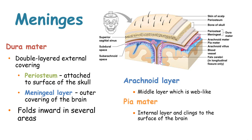The dura mater is a double-layered external covering that covers the periosteum, which is attached to the surface of the skull, and has the meningeal layer, which is the outer covering of the brain. The dura mater folds inward in several areas of the brain, for example the falx cerebri. The arachnoid mater is a middle layer that is web-like, and the pia mater is an internal layer that clings to the surface of the brain.